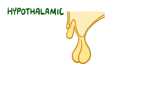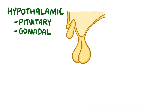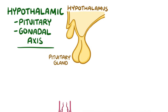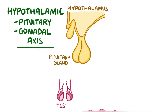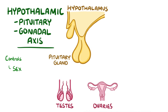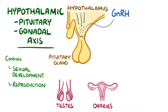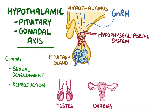The hypothalamic-pituitary-gonadal axis is a system of hormone signalling between the hypothalamus, pituitary gland, and gonads — either the testes or the ovaries — to control sexual development and reproduction. Gonadotropin-releasing hormone is released into the hypophyseal portal system, which is a network of capillaries connecting the hypothalamus to the hypophysis, or pituitary.